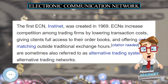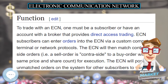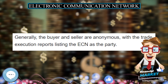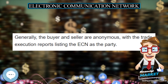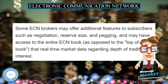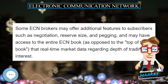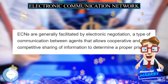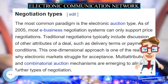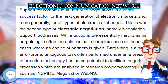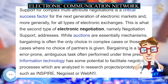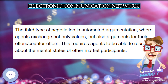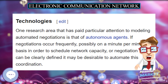The term ECN was used by the SEC to define any electronic system that widely disseminates to third parties orders entered by an exchange market maker or OTC market maker, and permits such orders to be executed against in whole or in part. The first ECN, Instinet, was released in 1969 and provided an early application of advances in computing. The spread of ECNs was encouraged through regulatory changes by the SEC; in 1975, the SEC adopted the Securities Acts Amendments of 1975, encouraging the linking of all markets for qualified securities through communication and data processing facilities.